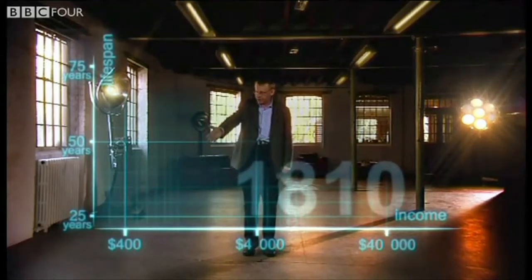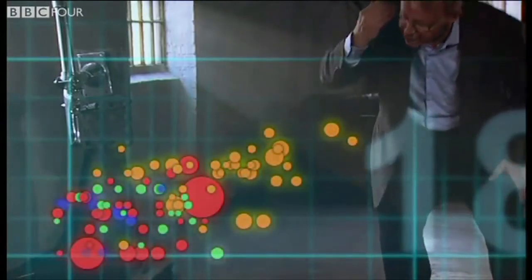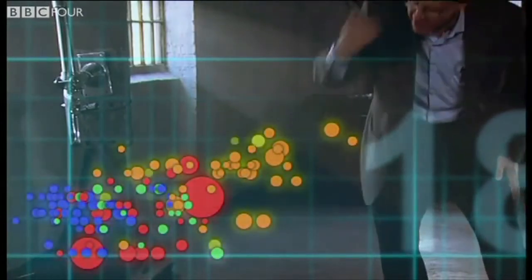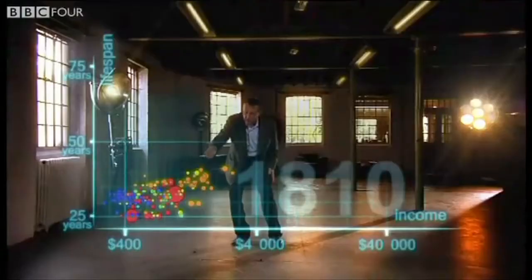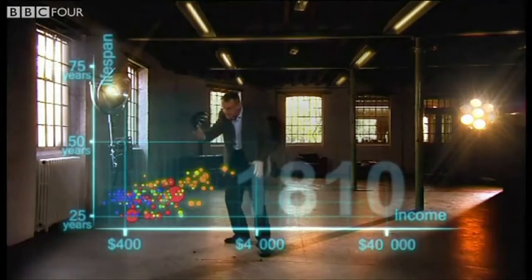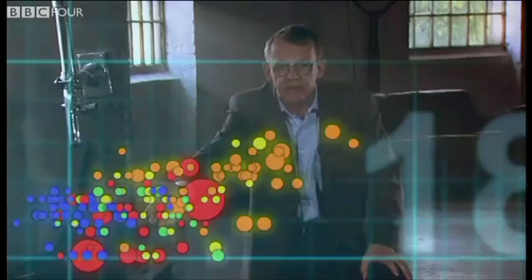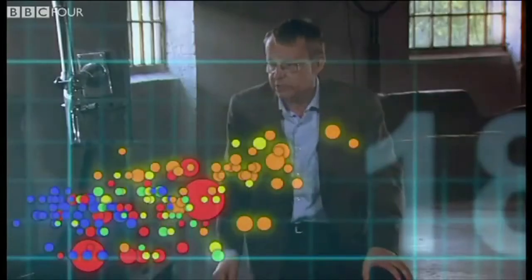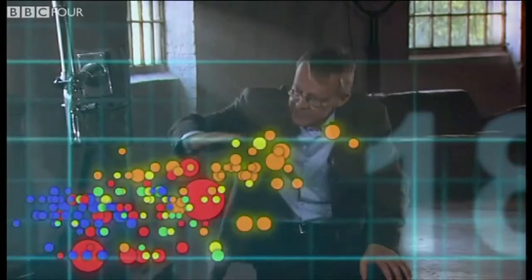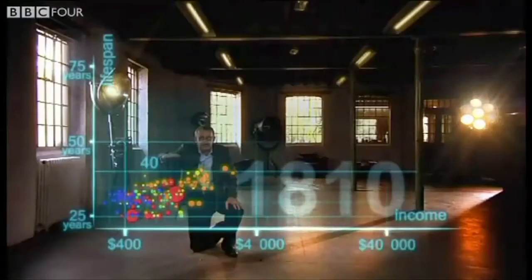Here come all the countries — Europe brown, Asia red, Middle East green, Africa south of Sahara blue, and the Americas yellow. The size of the country bubble shows the size of the population. And in 1810 it was pretty crowded down there, wasn't it — all countries were sick and poor, life expectancy below 40 in all countries.